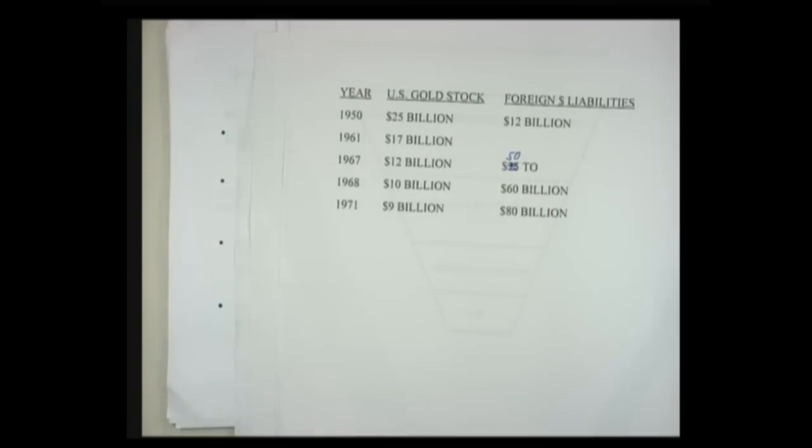By 1971, there was a huge run on gold and the price was really shooting up. The U.S. was pouring gold in to keep the price down and was losing it at such a rate that we would have lost the whole $9 billion in two or three weeks. At that point, President Nixon closed the gold window — he went on national television in August of 1971 — and simultaneously announced price controls. That was the end of the gold standard.